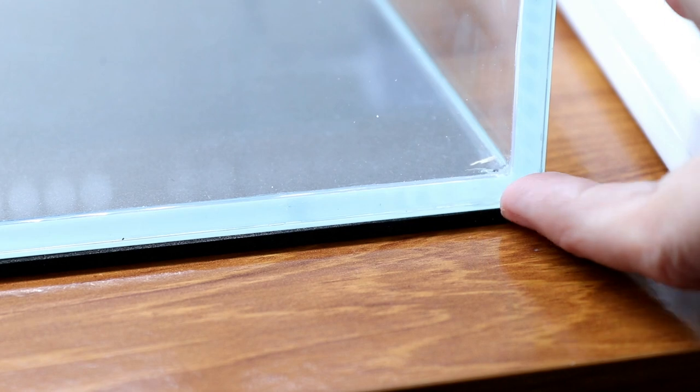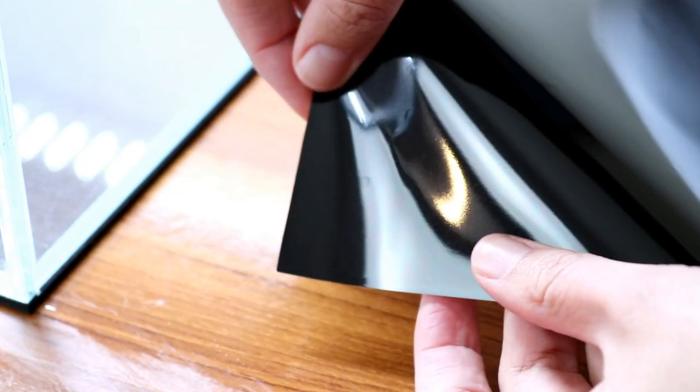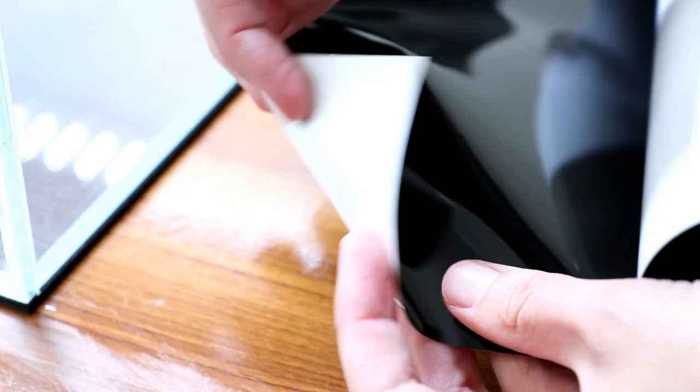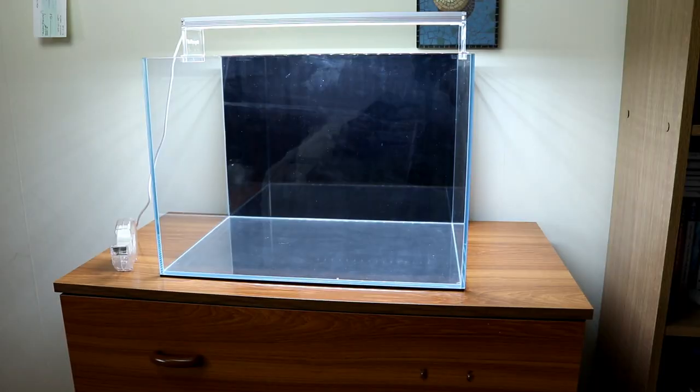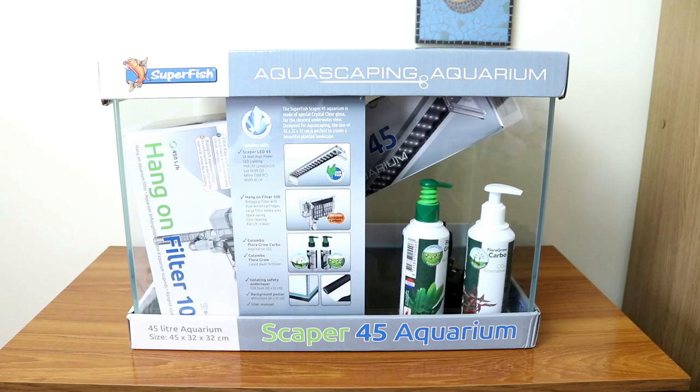You also get a slim piece of foam to protect your stand and your tank, and a poster for the back which has either a black side or a white side, and it can be used for hiding the filter once it's in place. In fact the only thing that's noticeably missing from this kit is a heater.